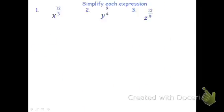Now let's look at a couple harder examples — we're going to go ahead and simplify these. The first one is pretty straightforward. I have x to the 12 thirds. I know that 12 divided by 3 is just 4, and 3 goes into 12 evenly, so x to the 12 thirds becomes just x to the 4th.